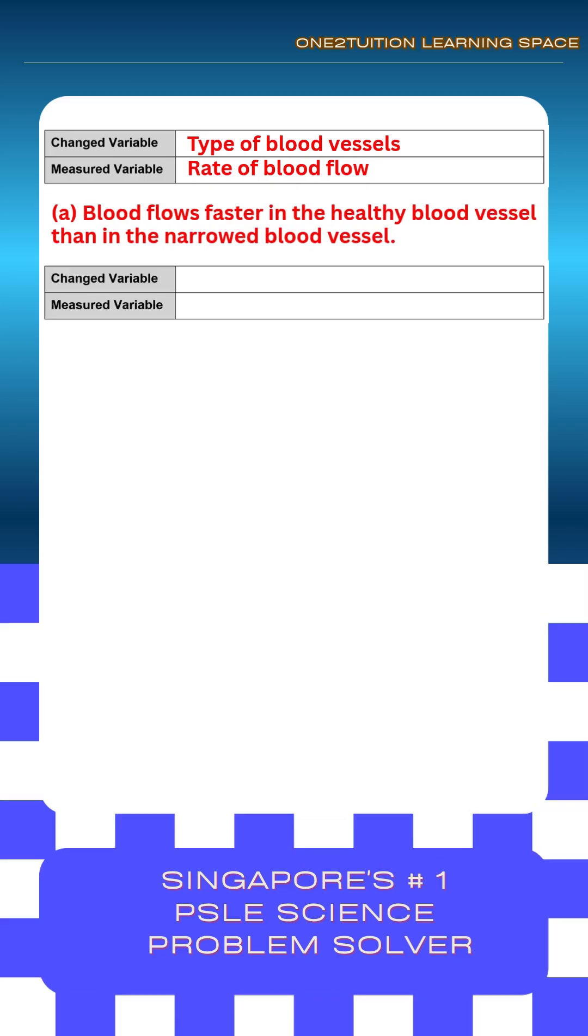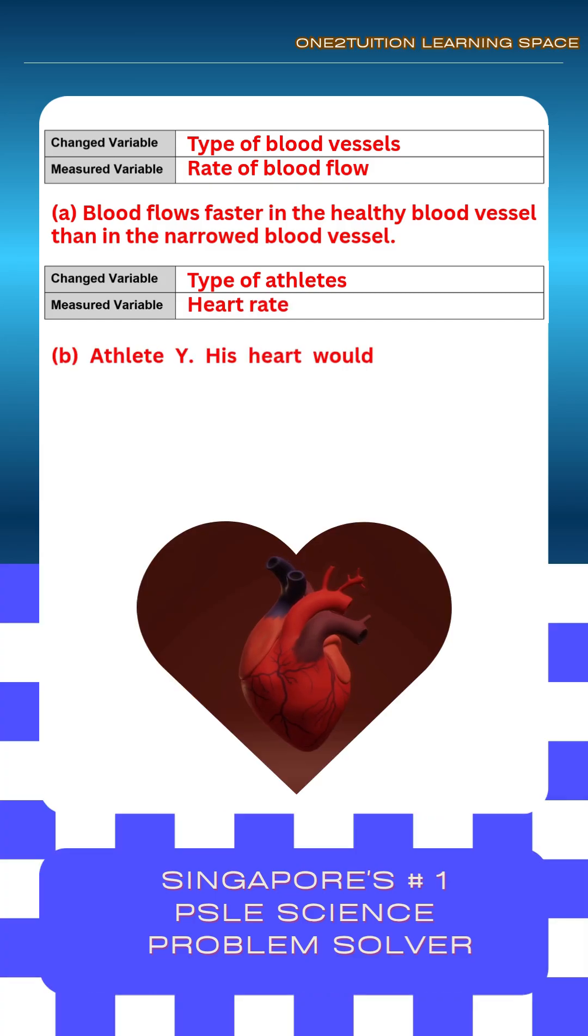Let's start by identifying the changed and measured variables of the question. Type of athletes. Heart rate. B. Athlete Y.